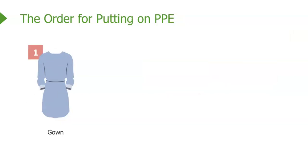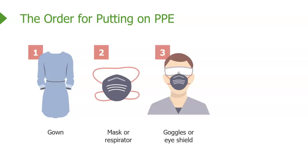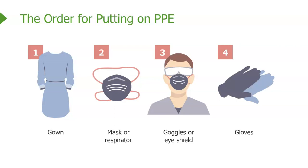Don't forget that with droplet precautions you'll also want to protect your eyes. There is a very specific order for putting on PPE: first you put on the gown, next the mask or respirator, third your goggles or eye shield, and fourth your gloves.